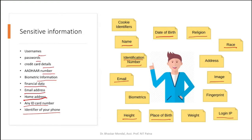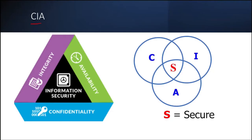CIA we have already spoken about — C stands for Confidentiality, I for Integrity, and A for Availability. If we can assure confidentiality, integrity, and availability — all three things together — then we will say that we have security.